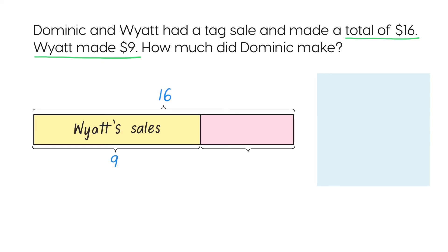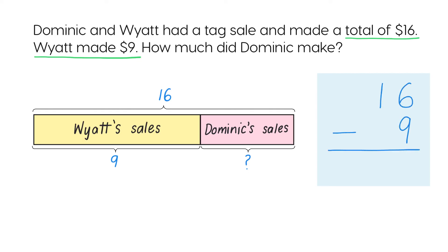We need to find the value of the pink bar, which represents Dominic's sales. To find the value, we subtract Wyatt's sales from the total sales. 16 subtract 9 is 7. So Dominic made $7.